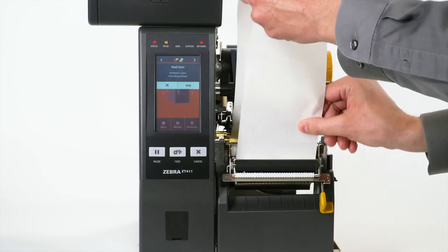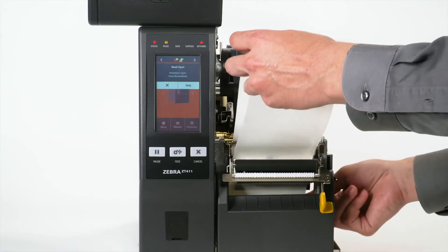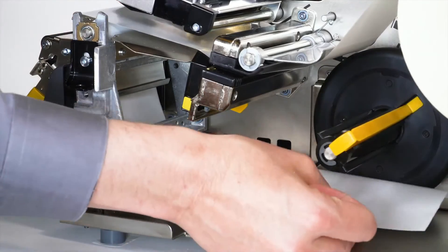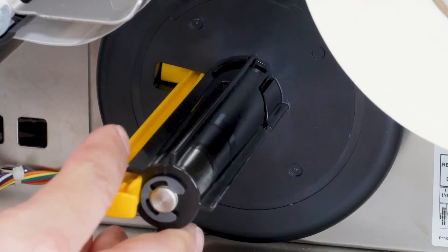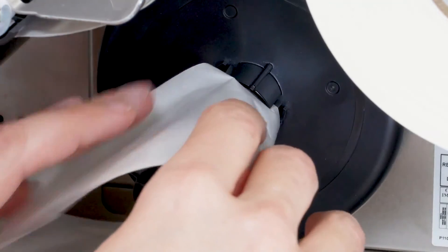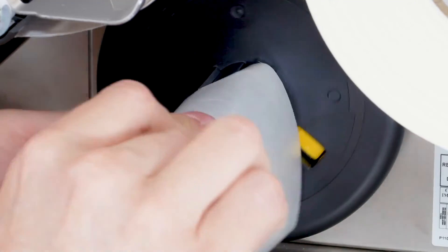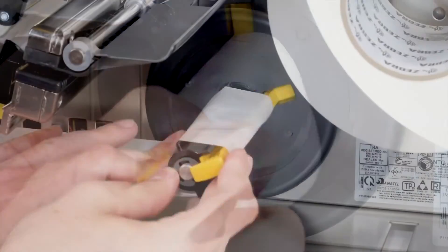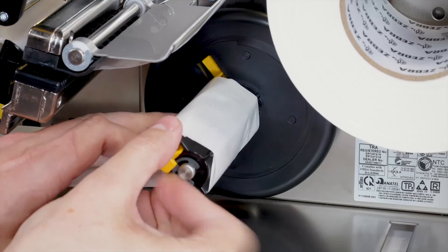Feed the liner into the peel assembly. Feed the liner into the printer. Locate the notch on the spindle. Insert the liner under the notch and around the spindle. Turn the spindle several times to secure the liner.